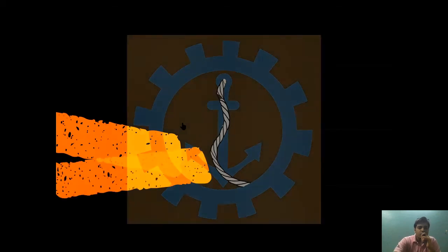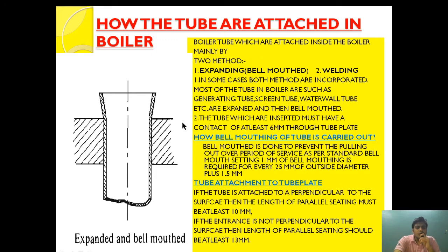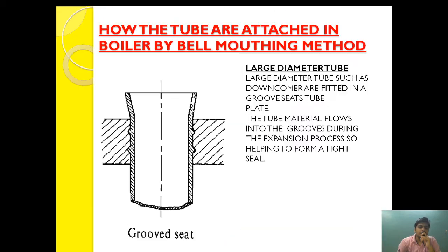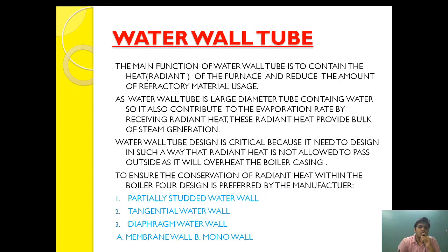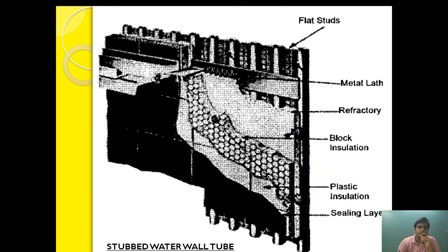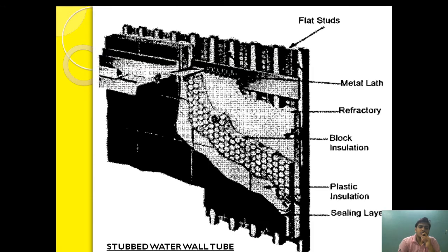Hello friend, welcome to Marine Engineering Hub. This is Ravi Gupta. Today we are going to talk about how the tubes are attached in the boiler — we will see tube attachment by expanding and welding, and after that we are going to see how the water wall tubes are made and what are the different types of water wall tubes and how they are connected.